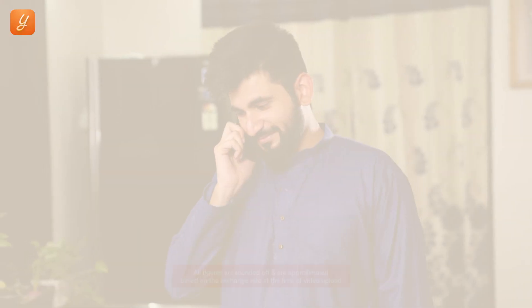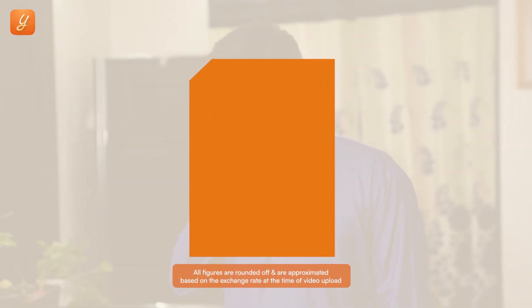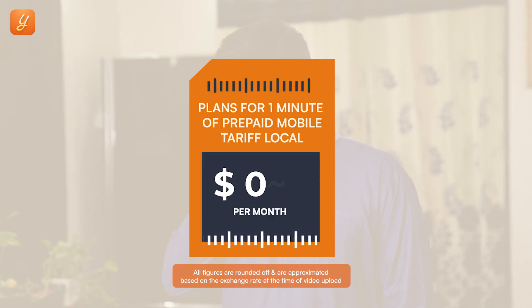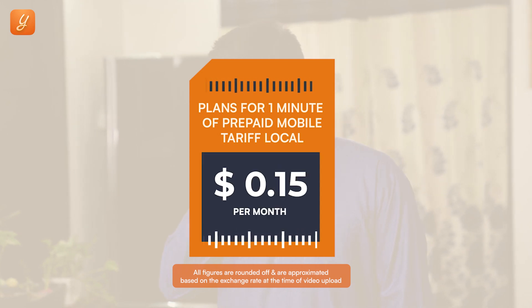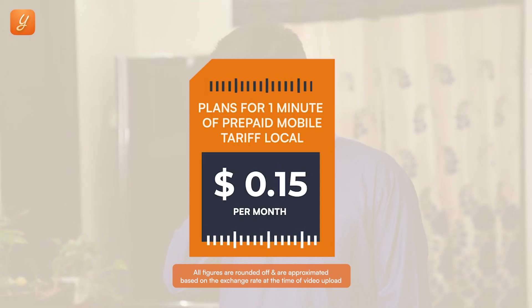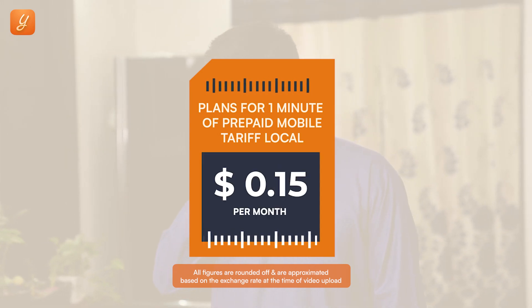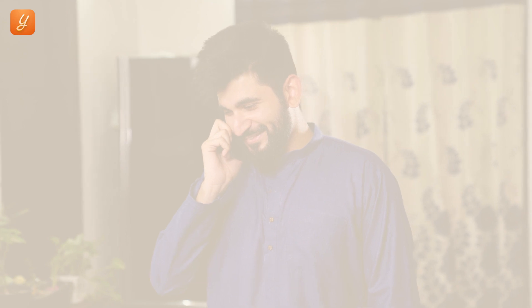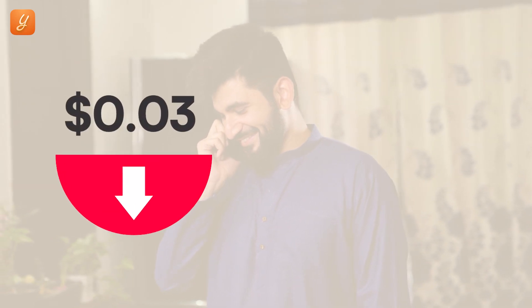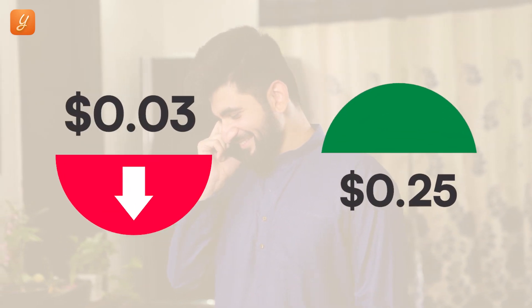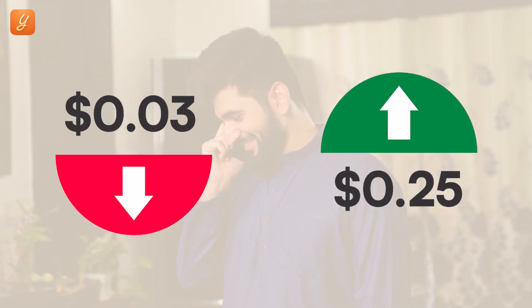Coming back to another crucial living expense that will help you stay connected with people: phone bills and carrier plans. The plans for one minute of prepaid mobile tariff local costs around $0.15 per month on average. However, it can be as low as $0.03 or go as high as $0.25.